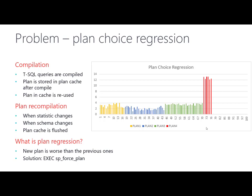In this picture, we can see that one query used four plans: orange, blue, green, and red. Sometimes, after a recompile, the performance of the new plan is worse than the performance of the previous plan. In this case, we can see that the fourth plan, the red one, is using more CPU than previous plans. This is known as plan choice regression.